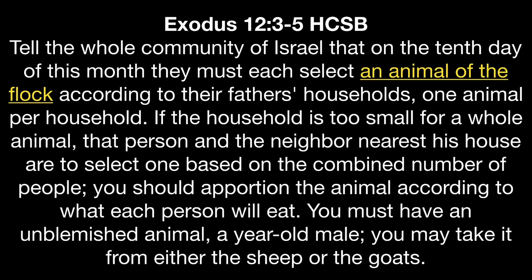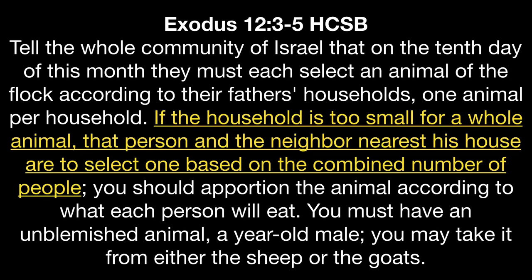Through history it appears that a sheep was preferred, but it was okay to use a goat. Verse 5 also specifies the age of the animal as a year-old male. Verse 4 tells us that combined families could eat the same Passover lamb in one house. Some households would be too small for the whole animal, meaning there would be a lot of wasted meat. So you combine neighbors who followed Yahweh and share the meal under one roof. This lets us know that the sheep or goat to be sacrificed was a good-sized animal.